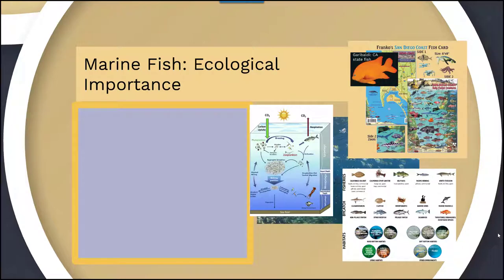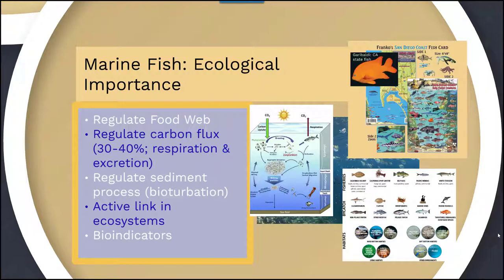Marine fish also serve a very important ecological role, helping to regulate the food web. They tend to regulate the carbon flux and contribute to approximately 34 to 40 percent of that through respiration and excretion. They also help regulate sediment processes — storing carbon within sediments — through a process called bioturbation, where they move sediment around by mixing within the sand or through behaviors like burying themselves, as flounders do. Some fish that live close to the sediment naturally contribute to this process just by swimming around.